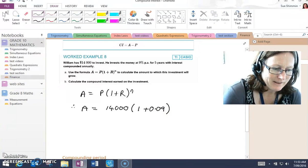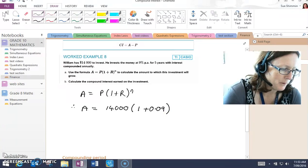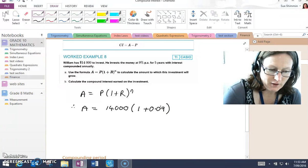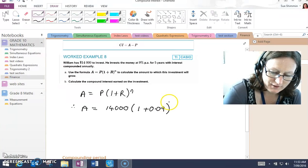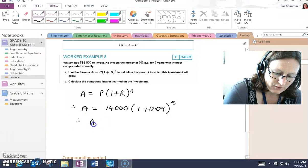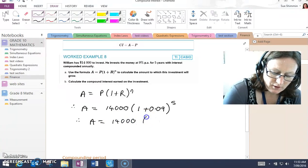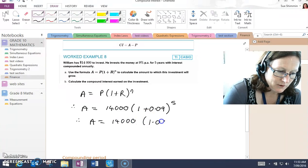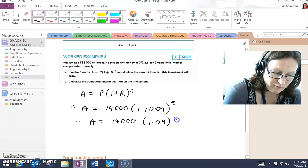N is the number of compounding periods. N is 5 years, so N is 5. We've then got 14,000, 1.09 to the power of 5.